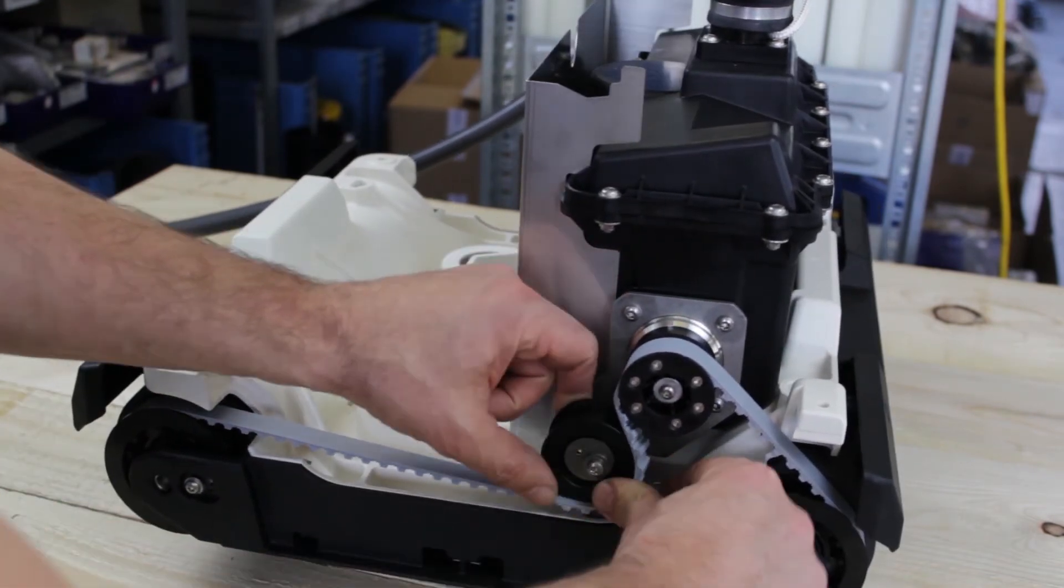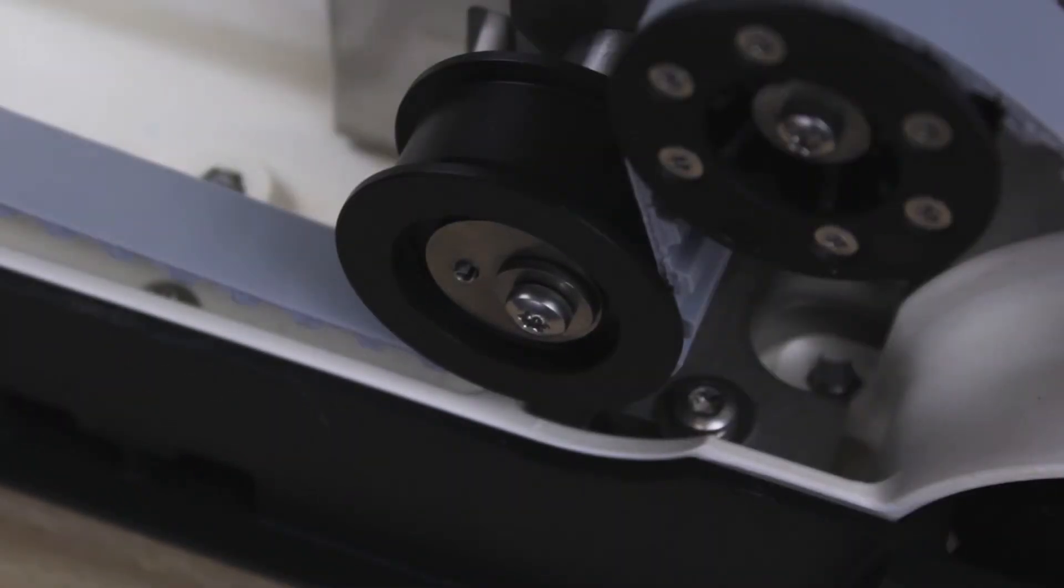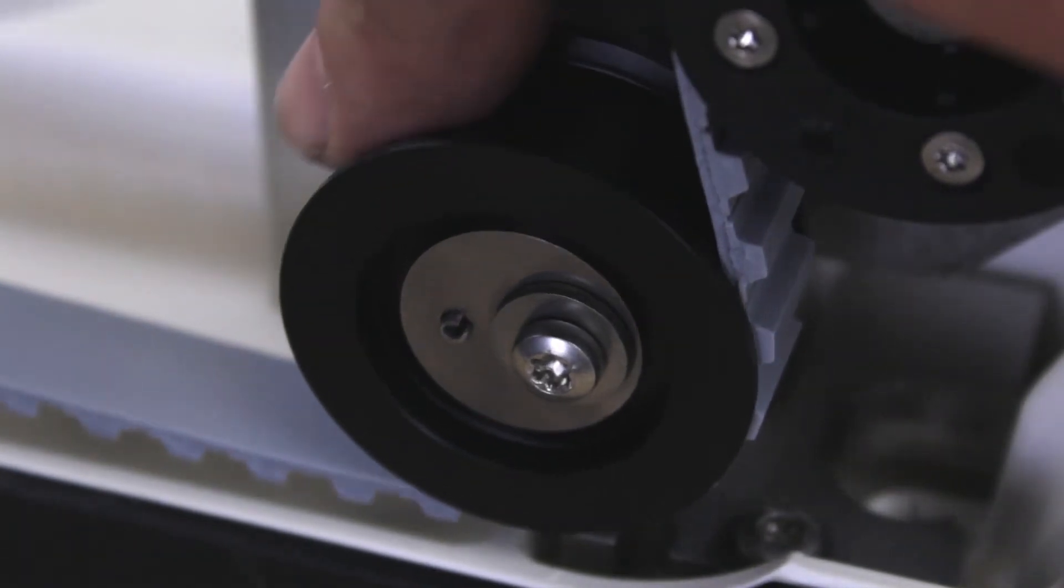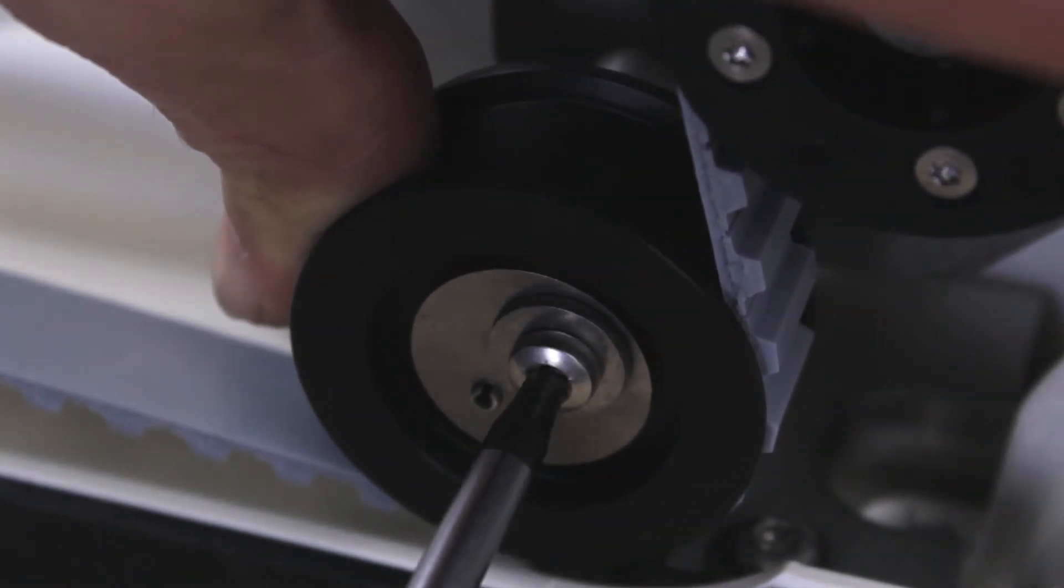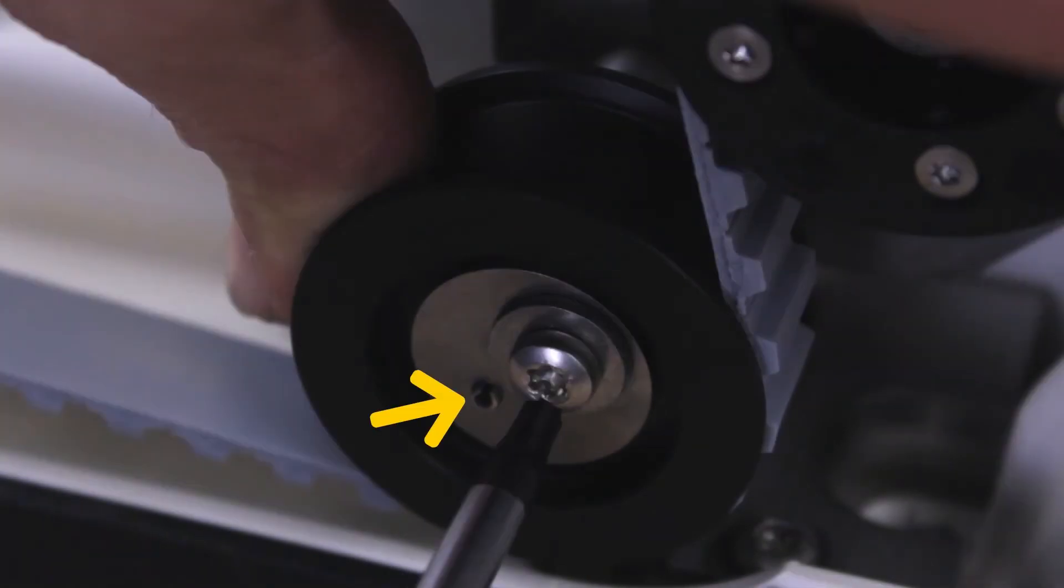To bring the drive belts back to tension, we turn the tension roller downwards as shown and tighten the screw. If the small opening is too far down, for example here, the drive belt is overstretched and a new one is needed.